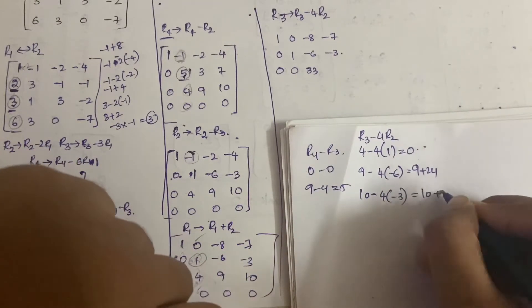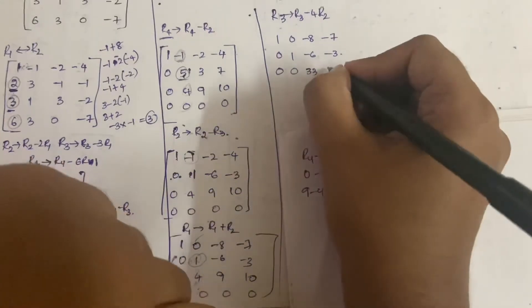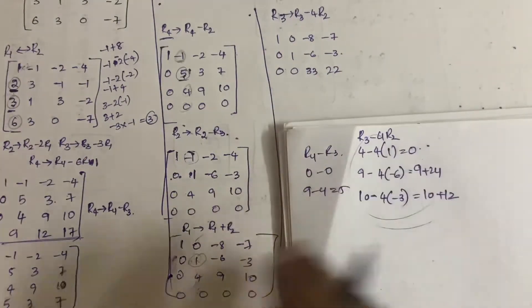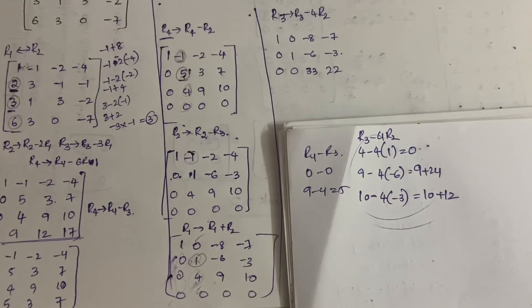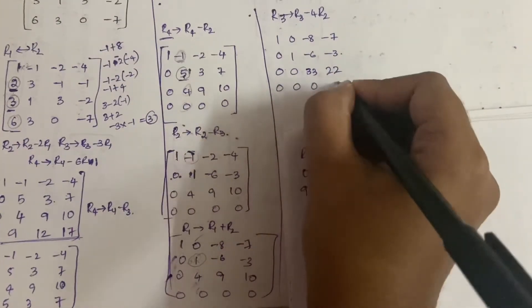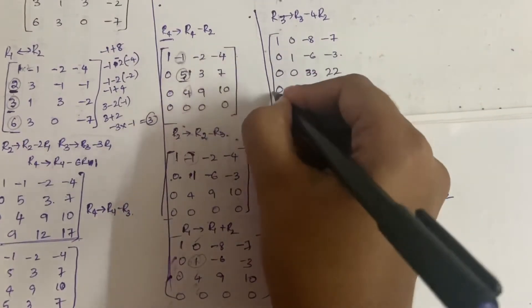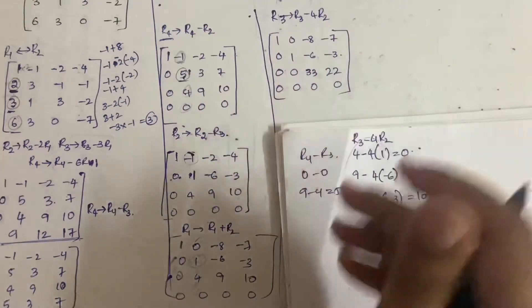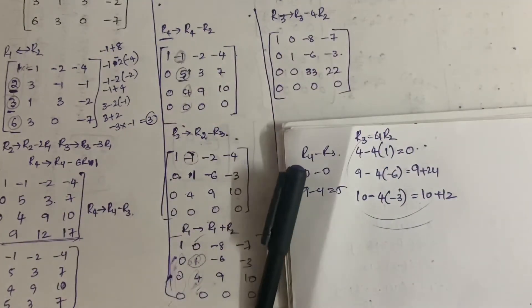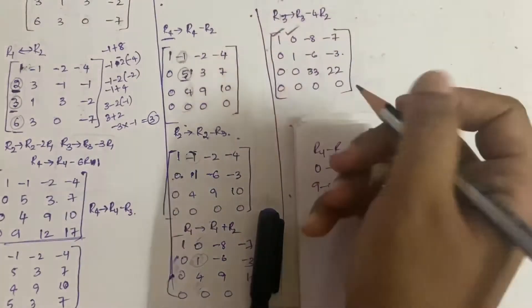You should do rough work on the side to avoid calculation mistakes. If you have enough time do it separately. The fourth row remains all zeros.